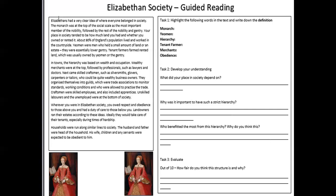Craftsmen were skilled people and also had apprentices. Unskilled labourers were at the bottom of society. Wherever you were in Elizabethan society, you owed respect and obedience to those above you and had a duty of care to those below you. If you were the monarch, everyone had to obey you, but you also had to respect the people below — if you didn't, it could cause problems. Landowners ran their estates according to these ideas and would take care of their tenants, especially during times of hardship. Households were run similarly: the husband and father were head, and his wife, children, and servants were expected to be obedient to the man of the house.